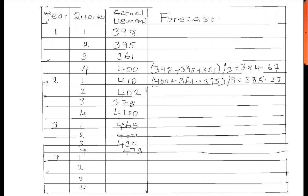For the next one, quarter 2 of year 2, we do the same — get the average for the last 3 data given. We start with 410, then 400, and 361. So we say 410 plus 400 plus 361, all divided by 3, which gives 390.33.